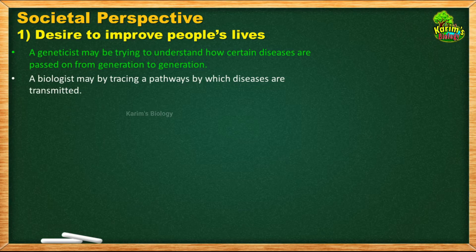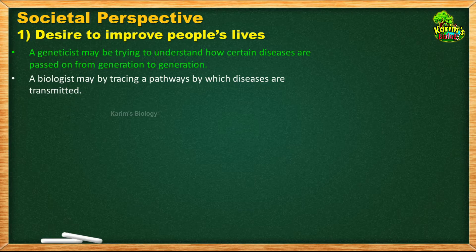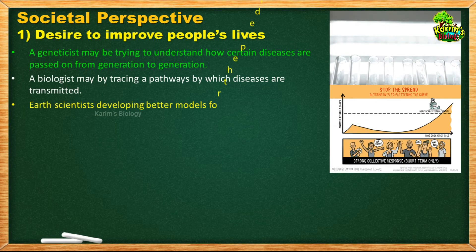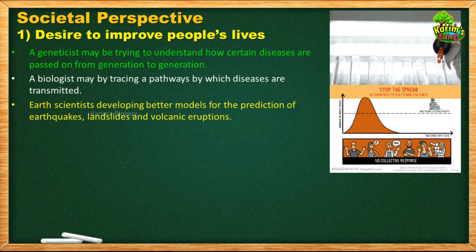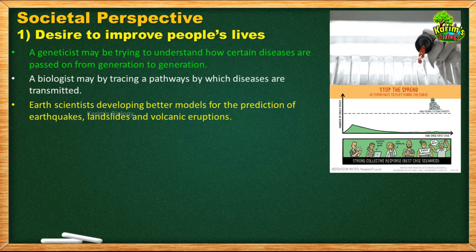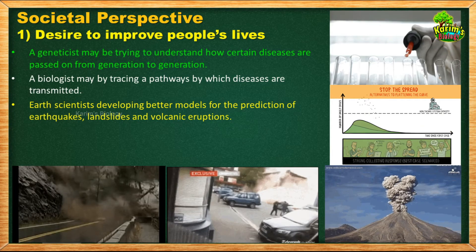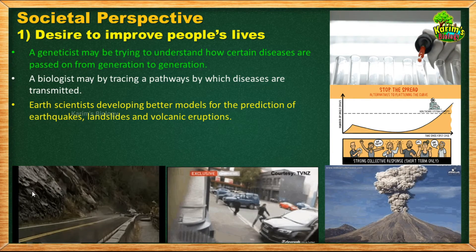Not only genetic disorders — some common diseases are transmitted by biological agents, and if we cannot understand how they spread, they may lead to pandemics affecting most people on Earth. Governments appoint biologists to study how diseases are transmitted so we can find solutions to stop transmission and save lives. Earth scientists also develop better models for predicting earthquakes, landslides, and volcanic eruptions. These are natural disasters that are very hard to predict, and better prediction models could save many lives.